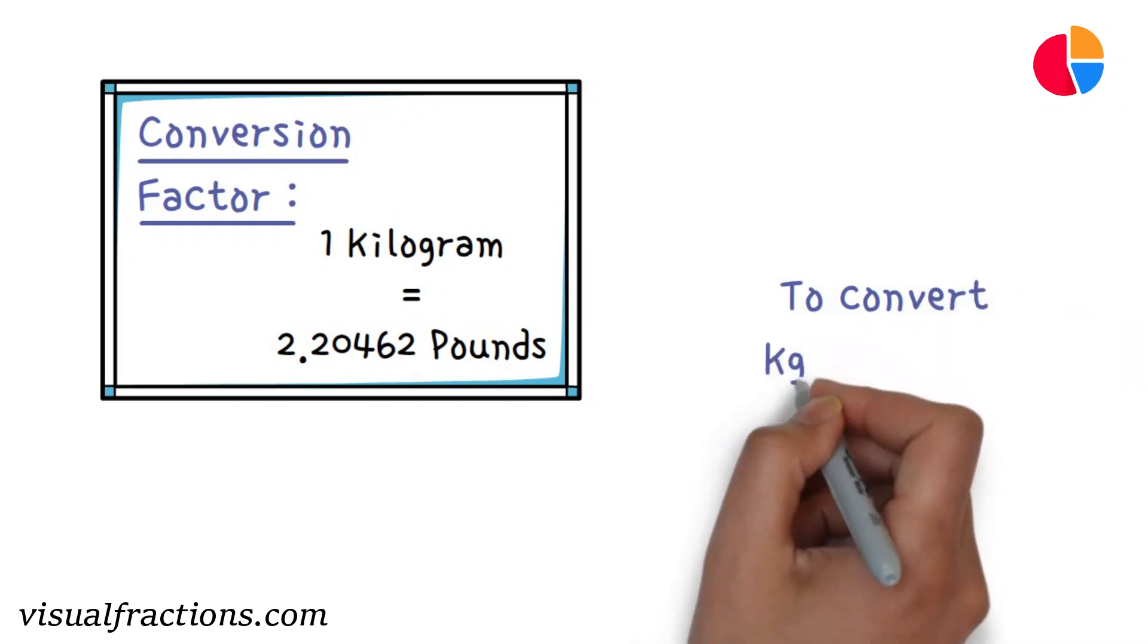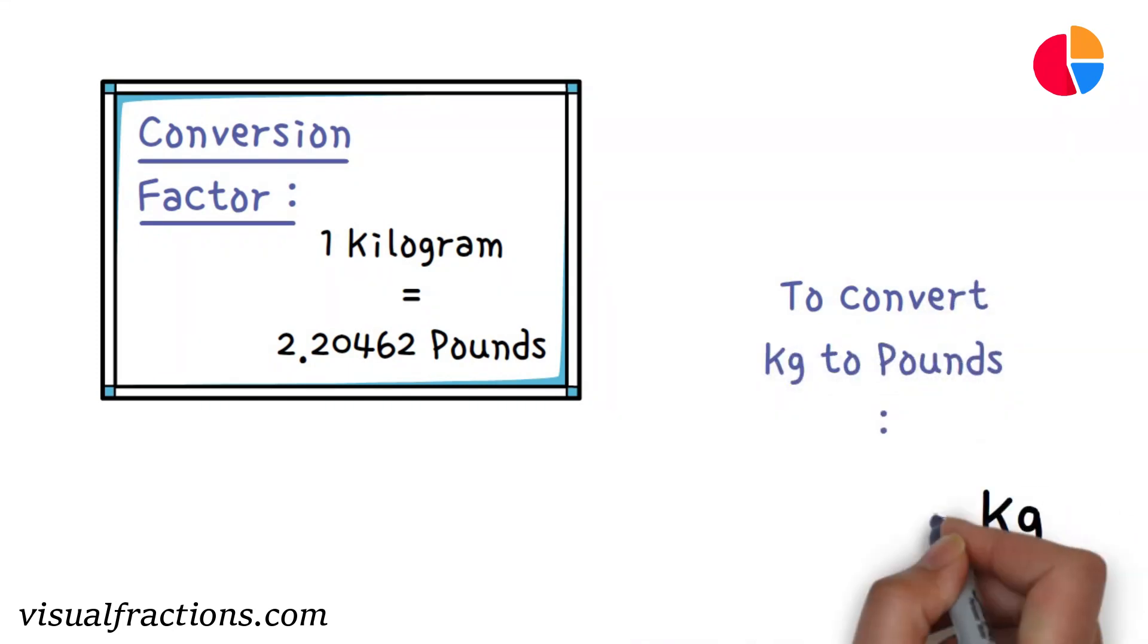To convert kilograms to pounds, all you need to do is multiply the number of kilograms by the conversion factor.